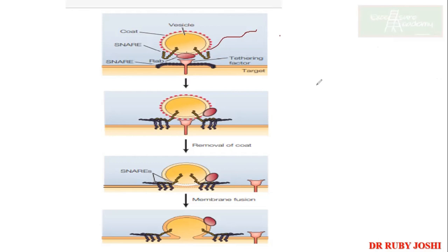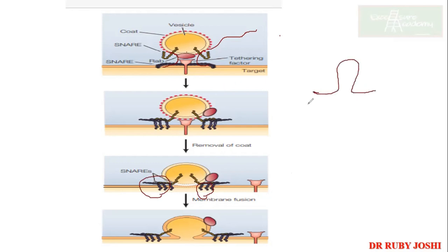In this diagram, the V-SNARE on the vesicle and the T-SNARE on the target membrane are shown. These SNARE proteins — including SNAP25, synaptobrevin, and syntaxin — get activated in the presence of calcium. The proteins present on the vesicle interact with those on the target membrane and get wrapped together with the help of a third protein. This forceful pulling brings the two membranes into contact and fusion begins.